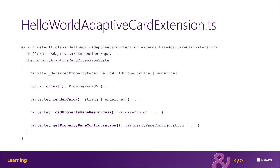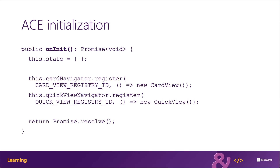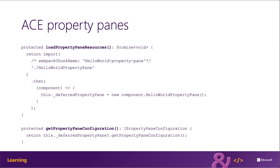The ACE contains a few methods similar to a SharePoint Framework web part. The onInit method handles state initialization, registration, and preloading of tasks. The getPropertyPaneConfiguration and loadPropertyPaneResources methods initialize, configure, and load the property pane for ACEs with configurable public properties. The loadPropertyPaneResources method uses Webpack's chunking feature to separate the property pane business logic into script files that are only loaded when the property pane is activated, optimizing performance for mobile users who won't use the property pane.